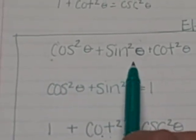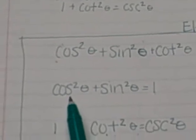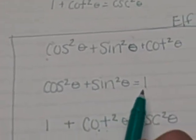If you start off and you look at cosine squared plus sine squared, if you look in the book, cosine squared theta plus sine squared theta equals one.